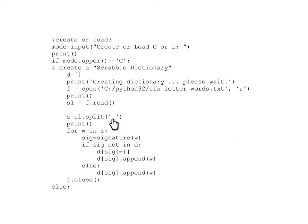We have one long string which we want to split based on every space. We're going to take that one long string that has six-letter words each separated by a space. The string was originally in 'sl'. What we're going to get out of this is the list 'Z' — the result of splitting a string is creating a list, so 'Z' is going to be that list of all six-letter words that were originally in 'sl'.